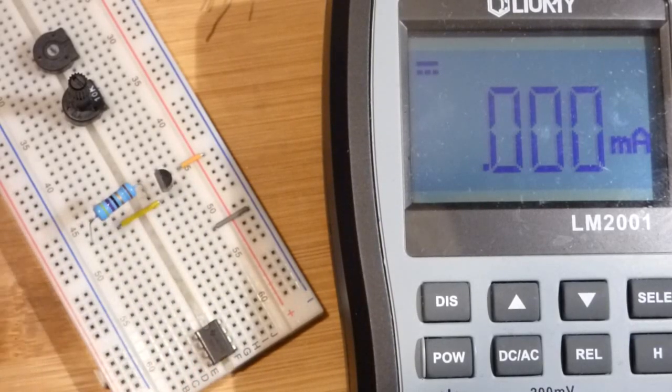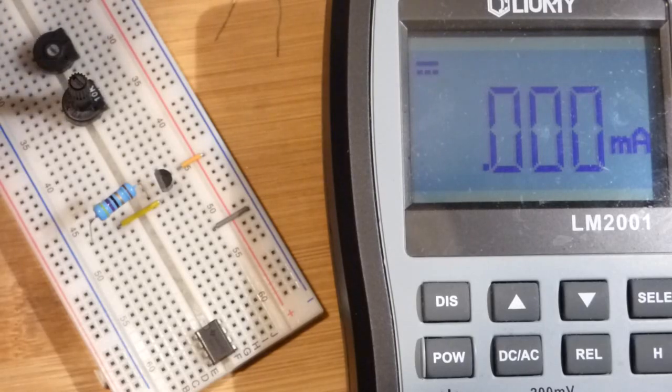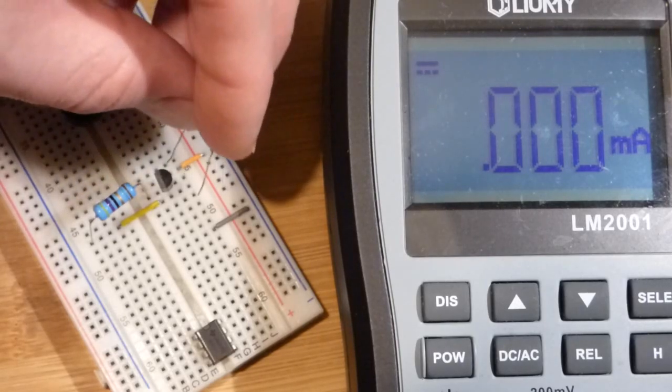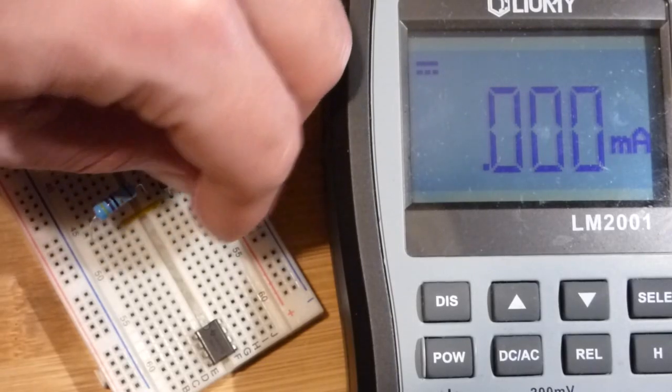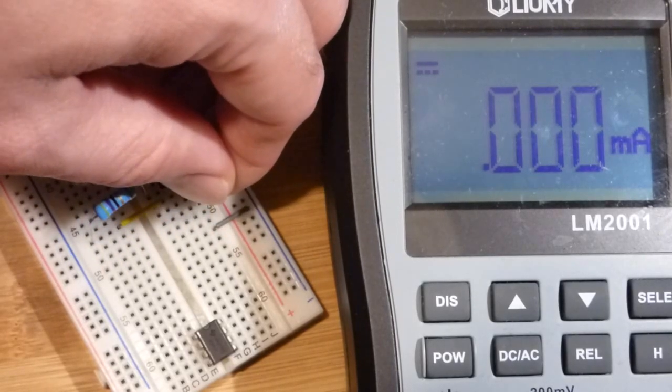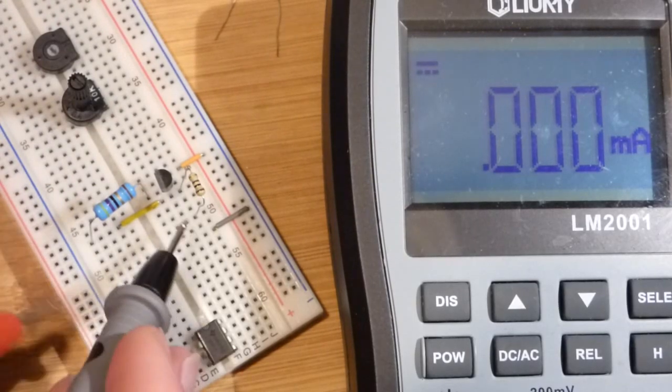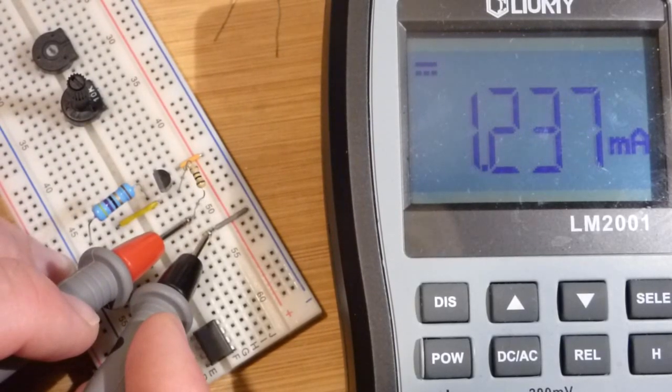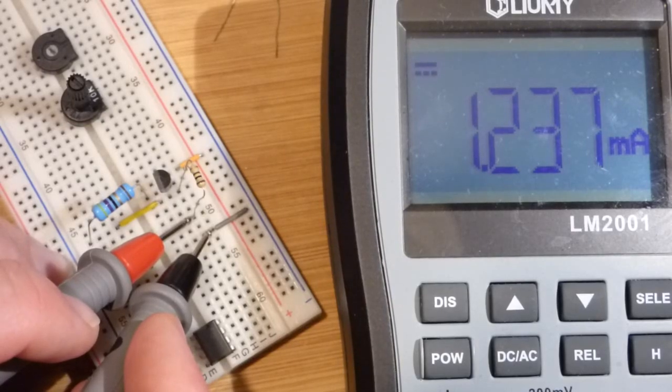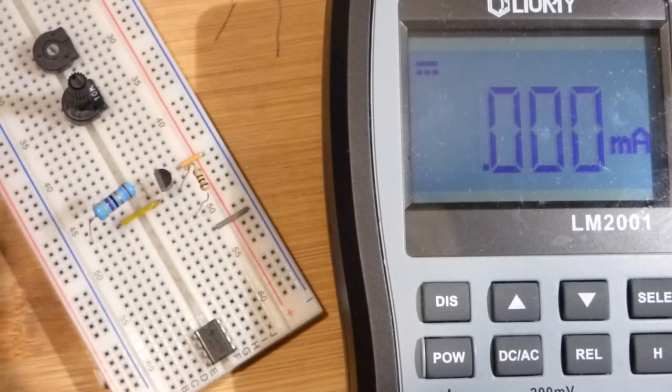Again we can put resistors in the way. I'll just use the 100 ohm resistor. Now we'll see that we still have about 1.2 milliamps of current, so it's a good current source.